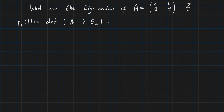Let's calculate it. We have the matrix 1, minus 2, 3, minus 4, minus the matrix lambda, 0, 0, lambda, written inside determinant bars.